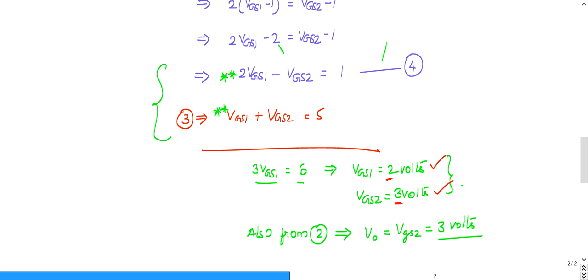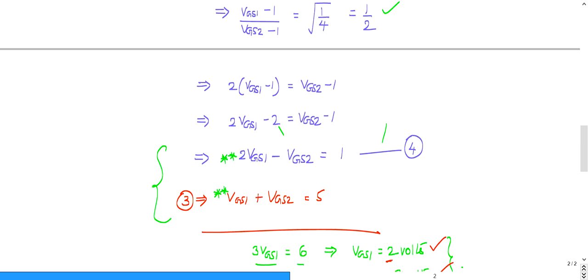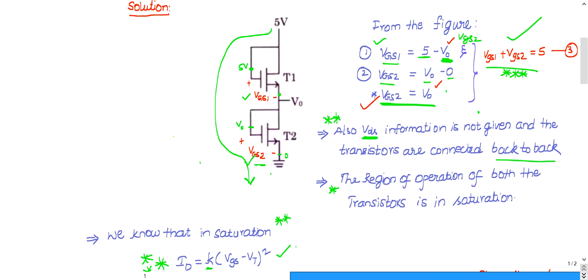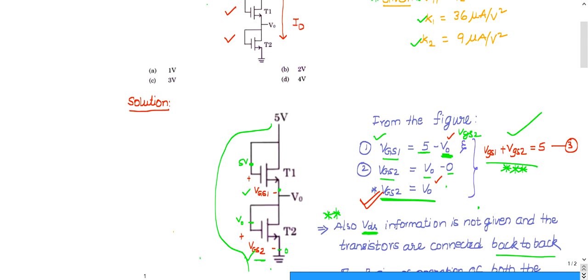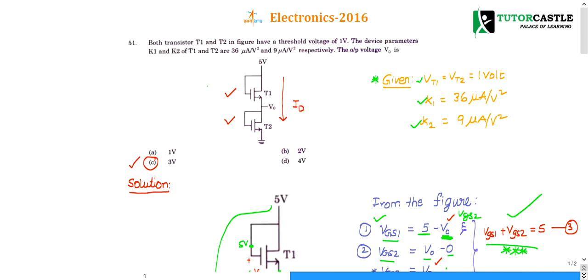Since output voltage equals VGS2, and VGS2 = 3 volts, the output voltage is 3 volts. Option C is the correct answer. For reference, question number 26 covers the various current equations in different MOSFET regions of operation. If you have any queries, post them in the comment box and subscribe to the channel for more updates.